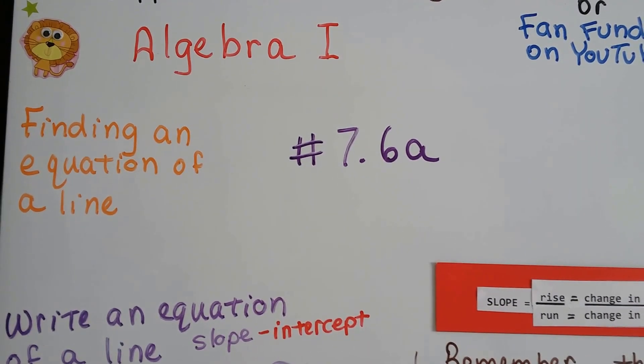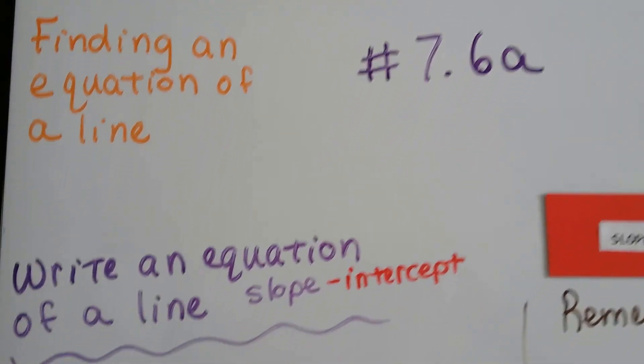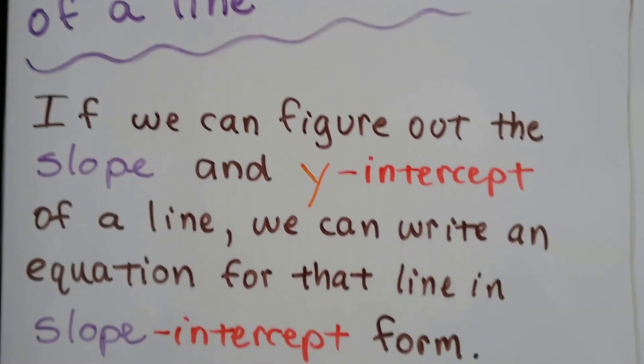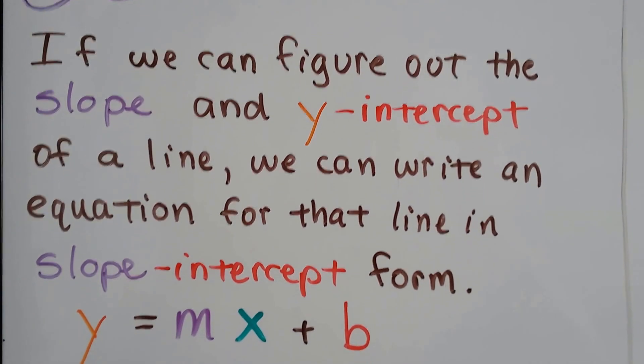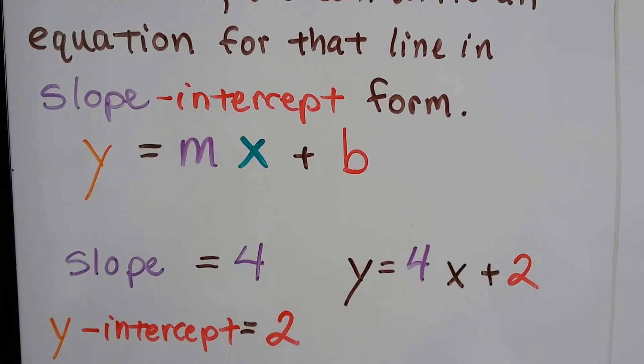We're going to write an equation of a line in slope-intercept form. This is 7.6a, algebra 1. If we can figure out the slope and y-intercept of a line, we can write an equation for that line in slope-intercept form, y equals mx plus b.